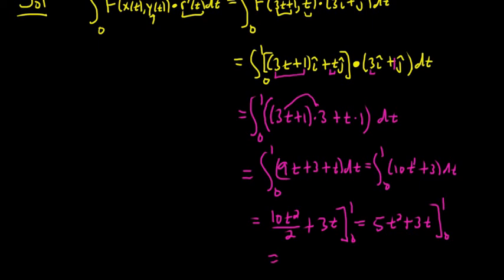And now it's a piece of cake. You plug in the 1 first. So you get 5 times 1 squared which is 5 plus 3 minus. And then you plug in the 0s so you just get 0 plus 0. So you end up getting 8. That's it. I hope this video has been helpful.